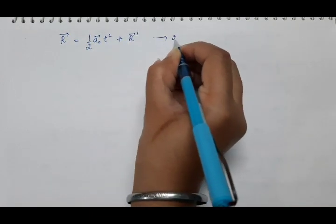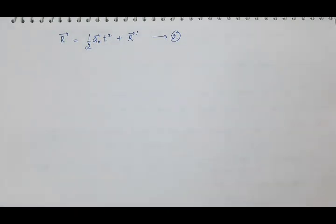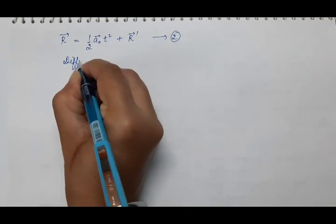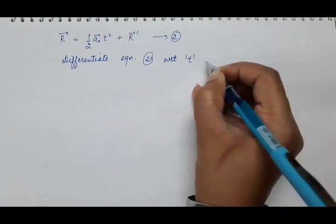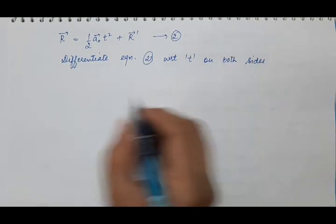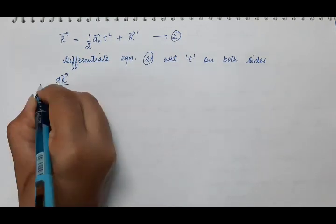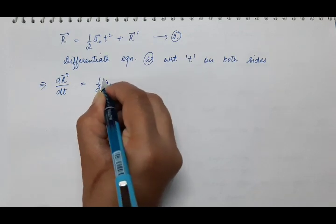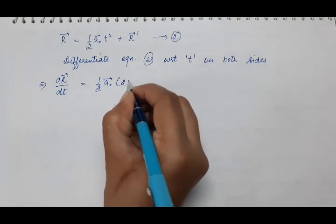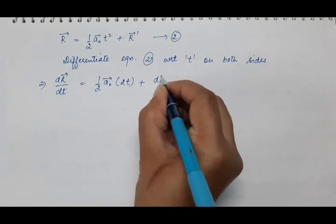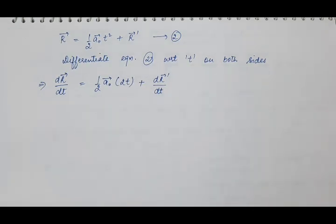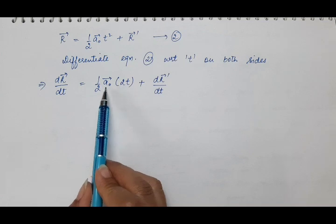So we have derived that R vector = ½A0 vector t² + R' vector. Suppose this is equation 2. Now differentiate this equation with respect to time t on both sides. You will get dR/dt = A0 t + dR'/dt. We have not differentiated A0 because this acceleration is the uniform acceleration of S' with respect to S.